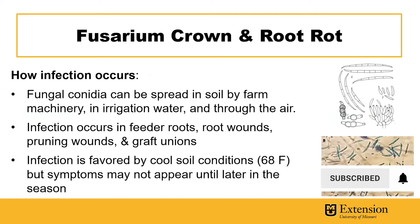Infection occurs through a structure called the conidia. The conidia can be seen in the picture on the bottom right. The blue structures are the part of the organism that can overwinter and survive in crop residue and cause further infection the next season.